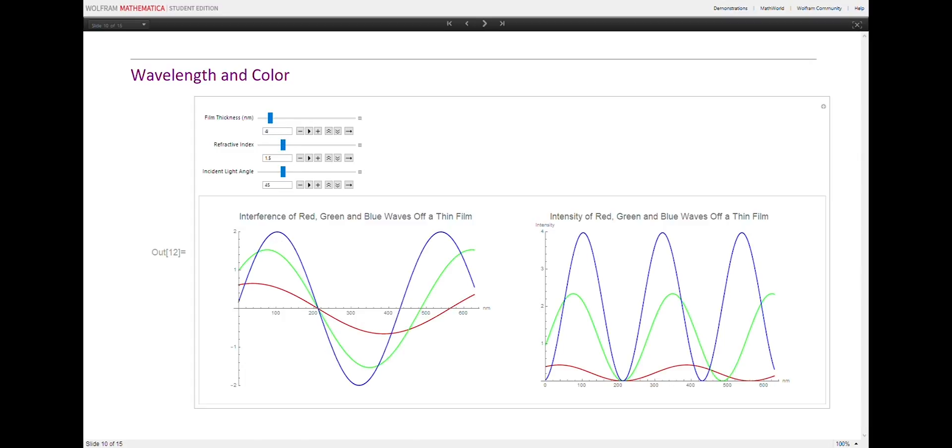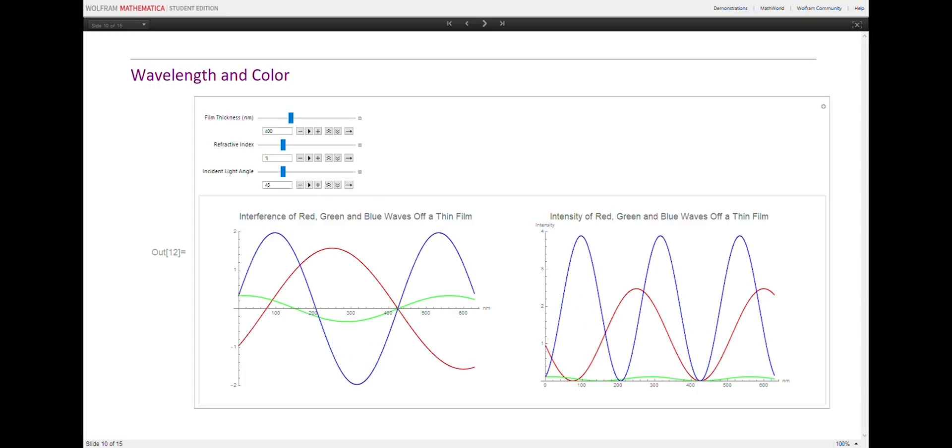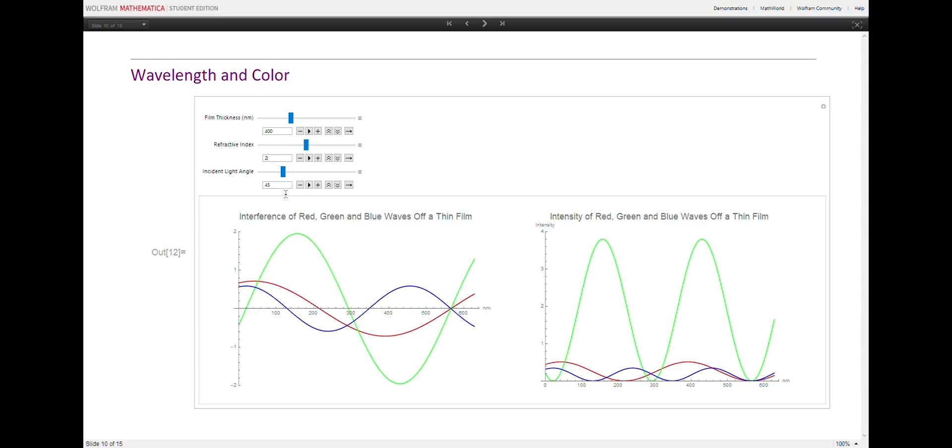If we try changing the film thickness to, let's say, 400 nanometers, the refractive index to 2, and keep the incident light angle at 45 degrees, we can see that green would be the dominating color.